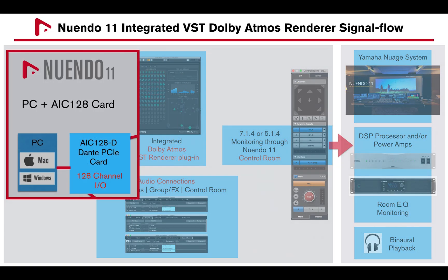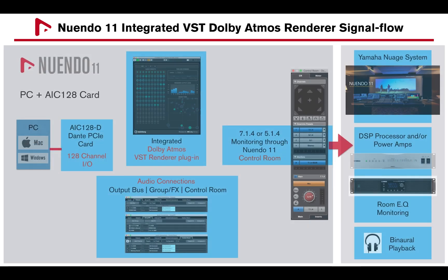You can use a Mac or Windows computer. In order to fully take advantage of the Dolby Atmos renderer, an audio interface with 128 outputs is required. In this case I will use a Yamaha AIC128D Dante PCIe card, which offers 128 inputs and output channels.